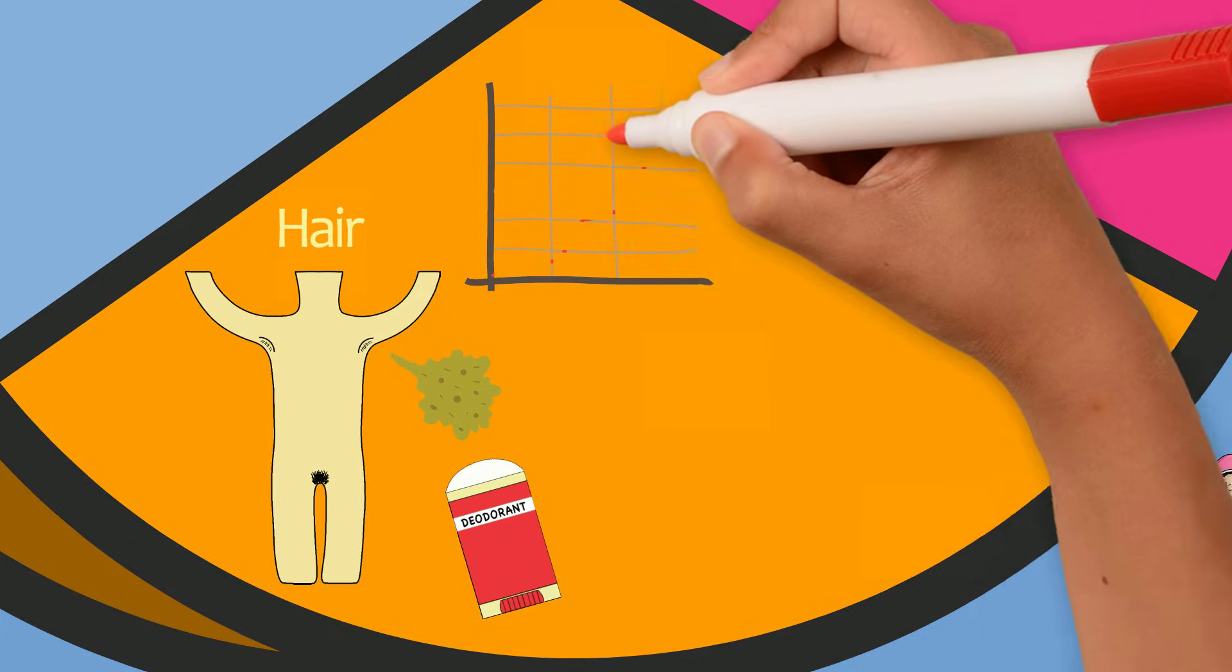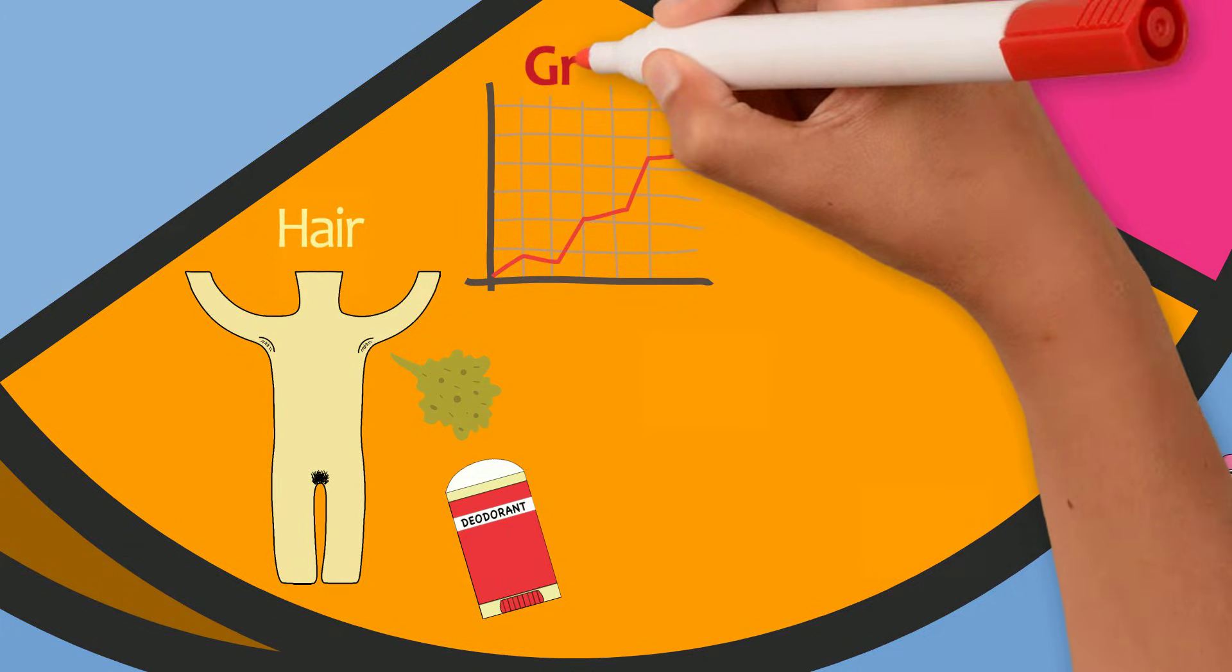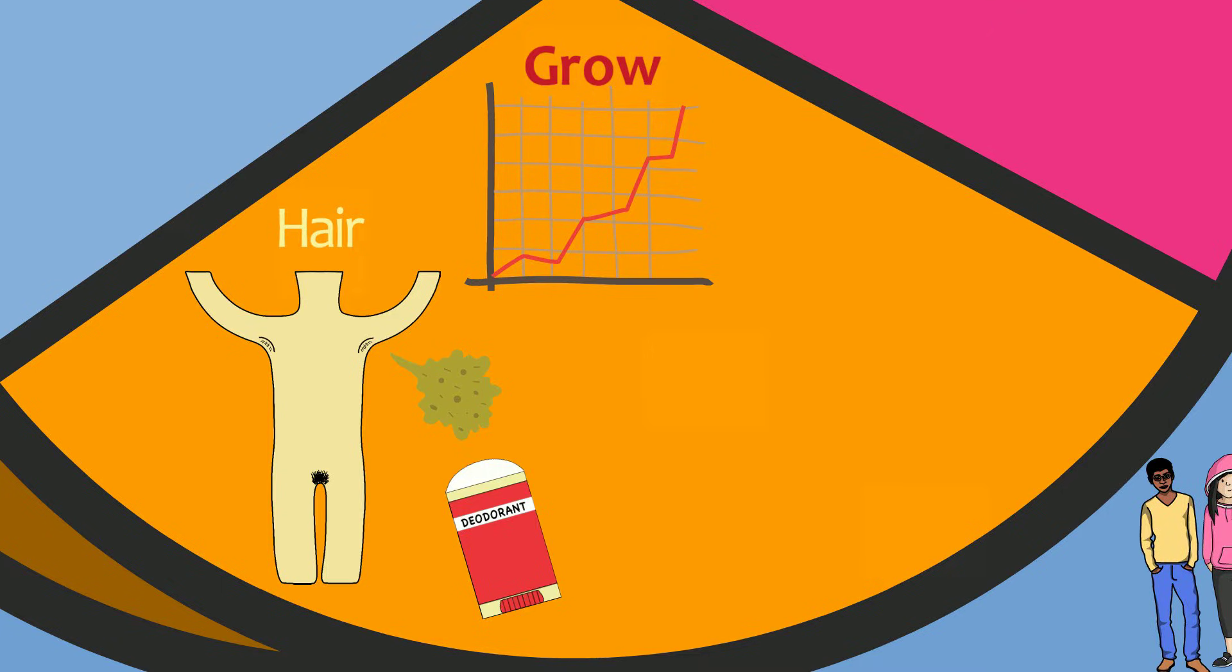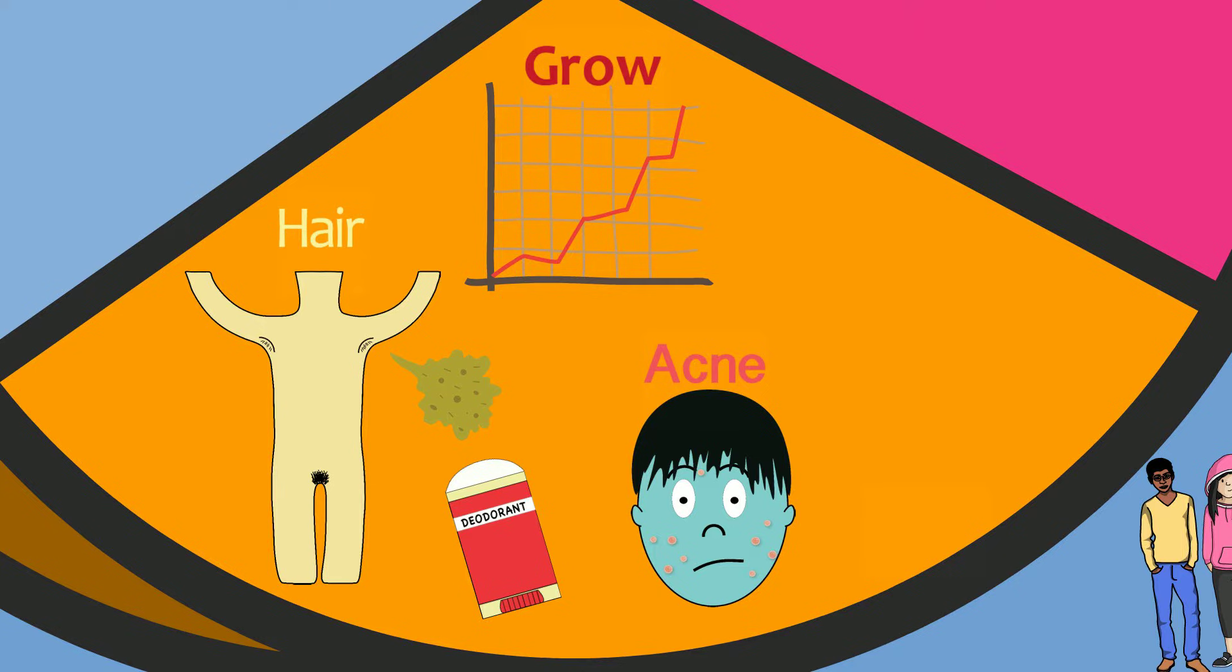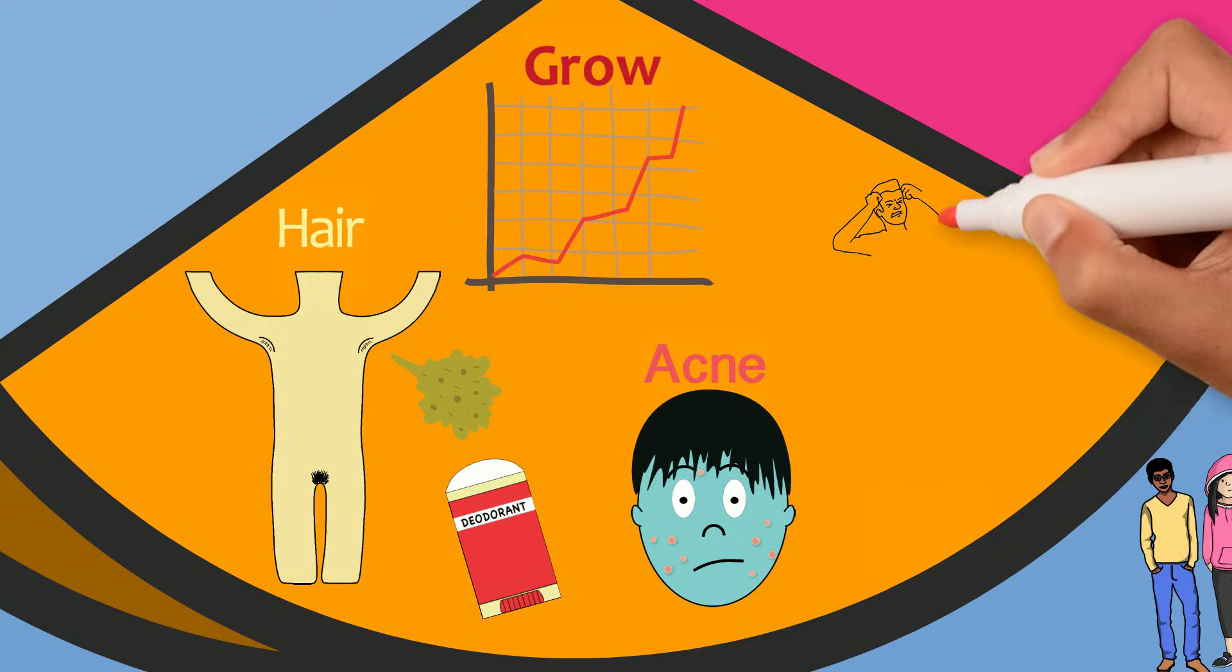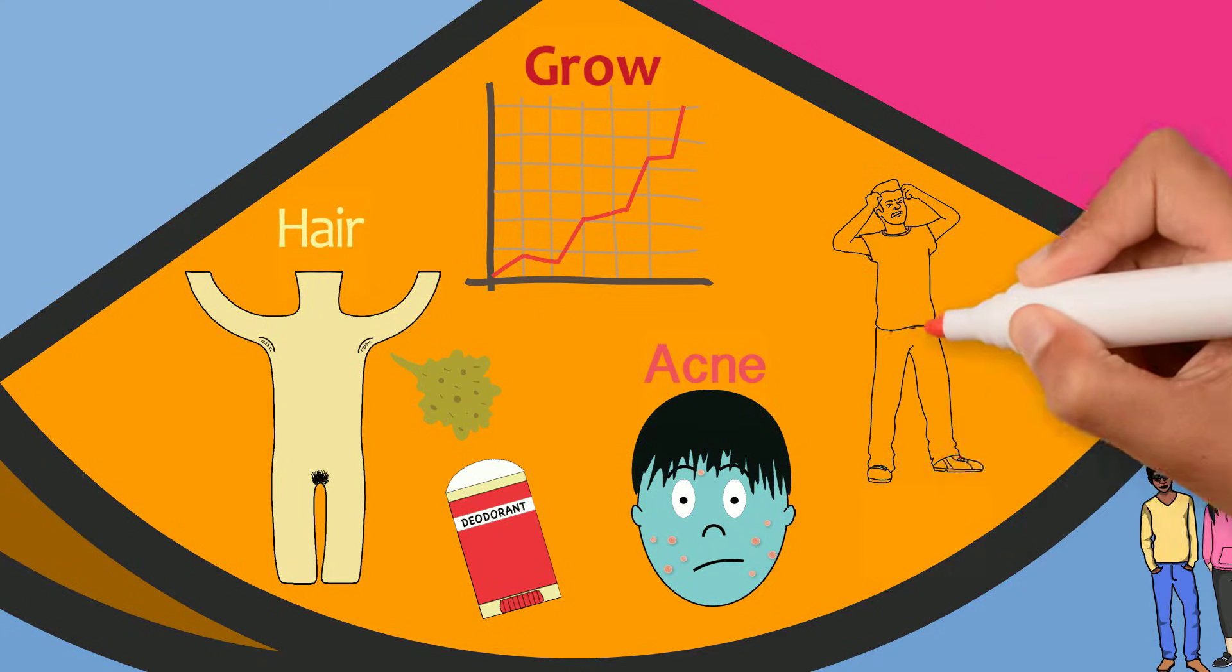Girls and boys go through a growth spurt where they grow taller faster than they did before. The skin also becomes more oily and this sometimes leads to acne, also known as pimples. Mood changes are common during puberty because of the changing hormones.